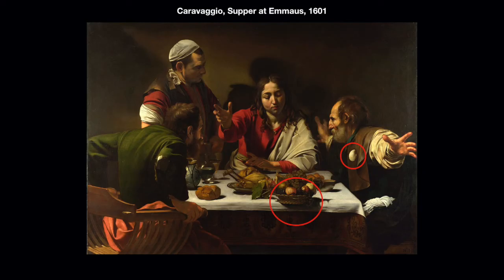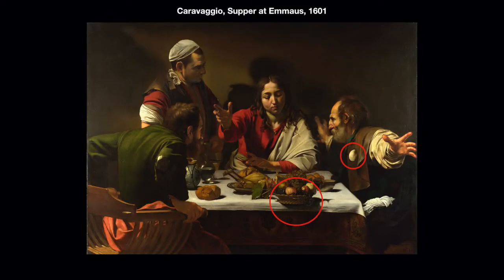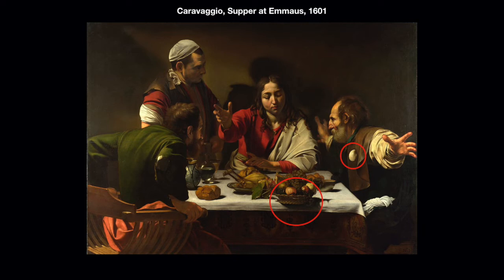I promised you Easter eggs in my introduction video, so here's one. I circled the shell on one figure's vest — it represents the pilgrimage to Santiago de Compostela. During the Middle Ages, through the Renaissance, and even today, people walk across the Pyrenees from France and end their journey in Santiago de Compostela. It's a scallop shell, and there are three myths about why: all involve Saint James, or Santiago, emerging from the ocean covered in scallop shells.